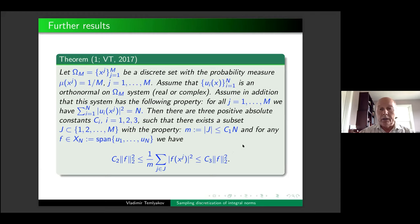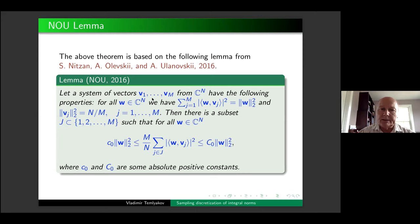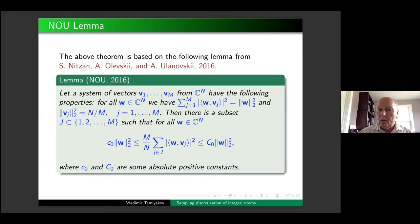The key lemma used in that proof is related to the Kadison-Singer problem. In the proof this lemma was used directly, and after applying it the rest of the proof is roughly half a page. The lemma is due to Nitzan, Olevskii, and Ulanovskii, derived from the fundamental result by Marcus, Spielman, and Srivastava which solved the Kadison-Singer problem.